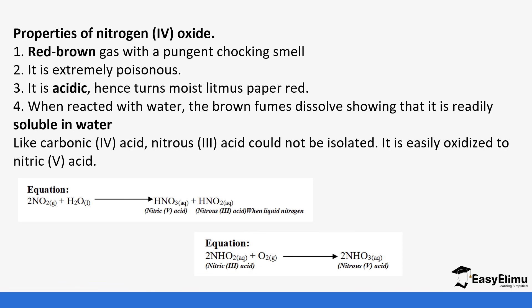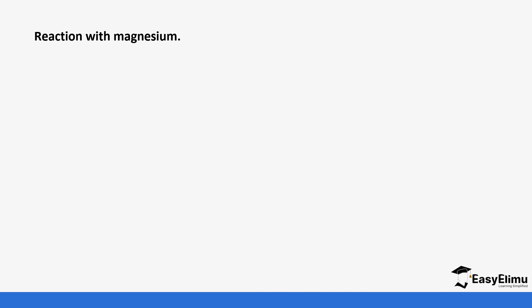Like carbonic acid, nitrous acid cannot be isolated — it is easily oxidized to nitric 5 acid. This step will be repeated when we discuss the large-scale production of nitric acid.